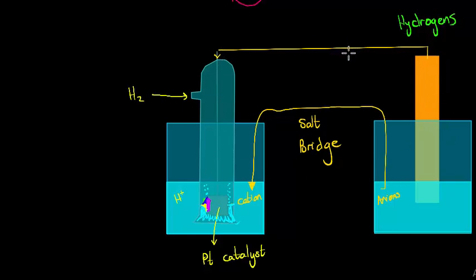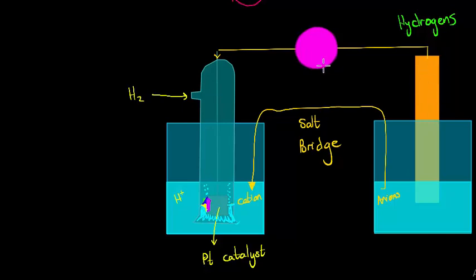We don't really want to measure the flow of electrons — we want to measure the ability to attract electrons, the strength with which electrons are drawn. To do that we use a voltmeter. A voltmeter measures joules per coulomb — the amount of energy a coulomb of electrons has. It measures the potential difference between the two points.